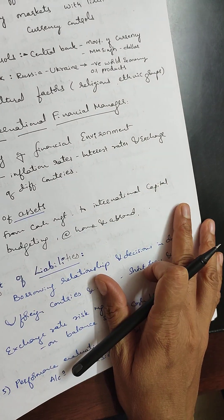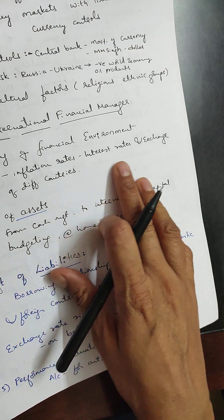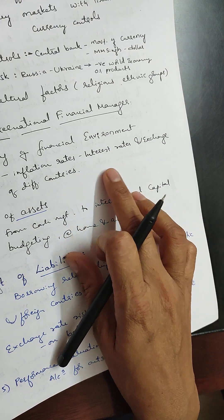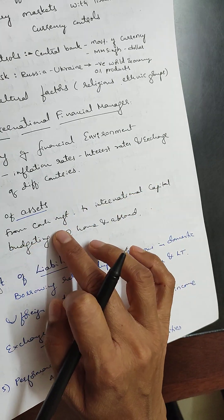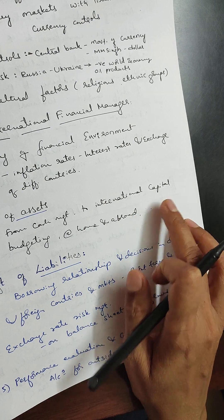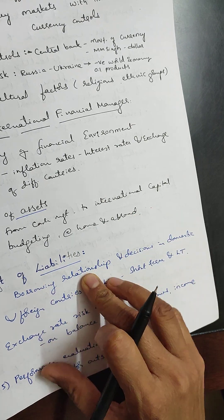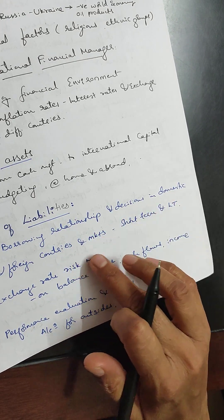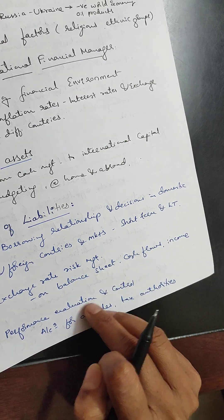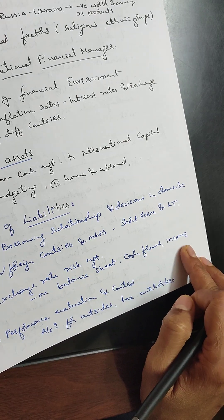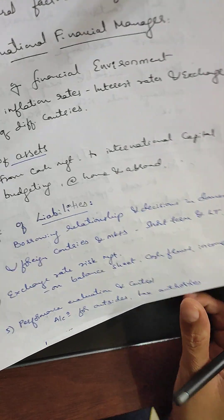The role of the international financial manager includes: forecasting of financial environment prices — inflation rates, interest rates, exchange rates of different countries; management of assets from cash management to international capital budgeting at home and abroad; management of liabilities; borrowing and relationship decisions in domestic and foreign markets — short term and long term; exchange rate risk management on balance, cash flows and income; performance evaluation and control; and accounting for outsiders and tax authorities.